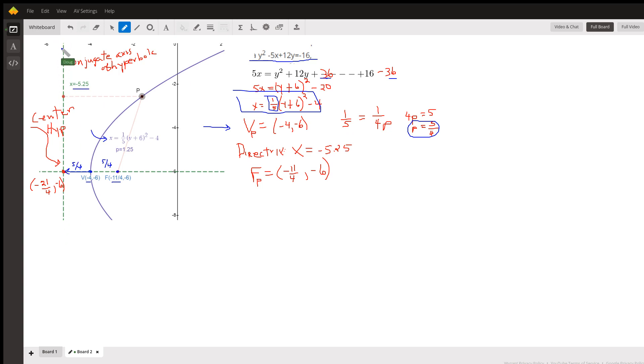The conjugate axis is perpendicular to the transverse axis and passes through the center of the hyperbola. That's the key because that's probably the most important thing when you're trying to find the equation of a hyperbola is to first locate the center.